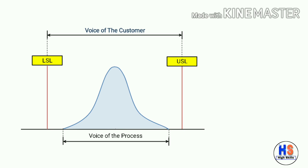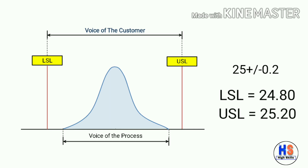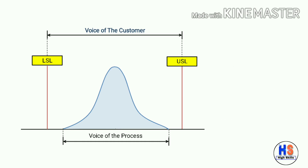First, we need to understand what is voice of the customer. There are two specification limits: LSL and USL. LSL means lower specification limit and USL means upper specification limit. These specification limits are the voice of the customer. For example, in a specification of 25 plus or minus 0.2, the lower specification limit will be 24.80 and the upper specification limit will be 25.20.